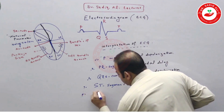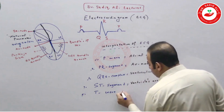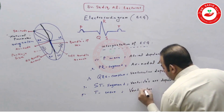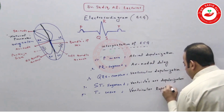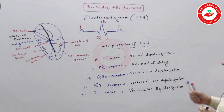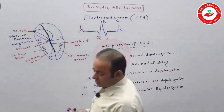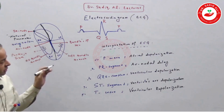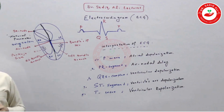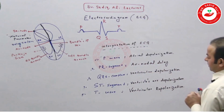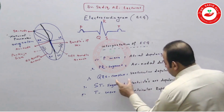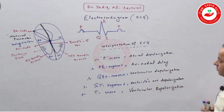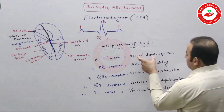The last wave is the T wave. The T wave in ECG represents ventricular repolarization. So ventricular depolarization is the QRS complex, and ventricular repolarization is the T wave — both ventricular depolarization and repolarization are present in the ECG. However, there is atrial depolarization shown as the P wave, but there is no atrial repolarization visible on the ECG.